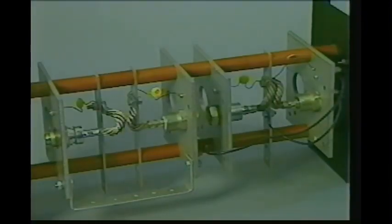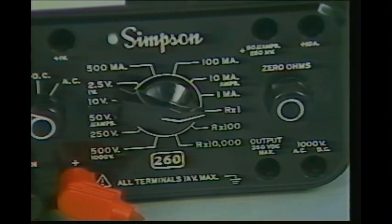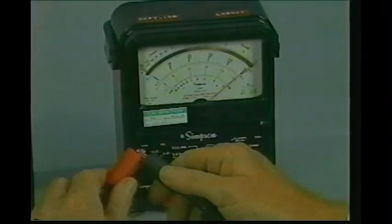After the diodes have been replaced, testing and repair of the rectifier is complete. In review, the first step is to open the primary power disconnect and ensure that the power is turned off. Second, select an analog meter with an R times one scale and zero the meter.